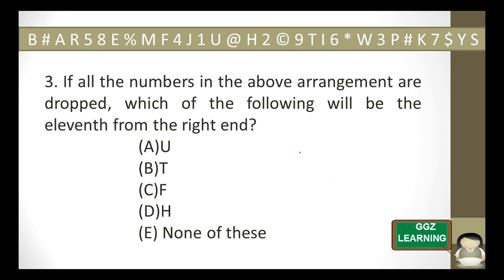The next question: if all numbers in the above arrangement are dropped, which of the following will be the 11th from the right end? We omit every number and count from the right: 1st, 2nd, 3rd — omit number — 4th, 5th, 6th — omit number — 7th, 8th — omit number — 9th, 10th — omit number — 11th. The symbol is not among the options, so none of these is the answer.